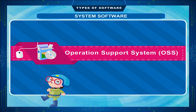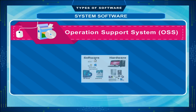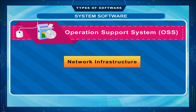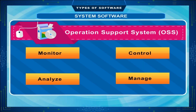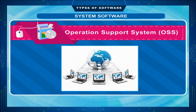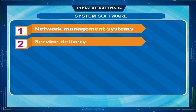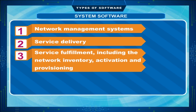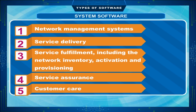Operation Support System (OSS). An OSS can be defined as the hardware and software that service providers use to manage network infrastructure, deploy services, and provide connectivity. It enables a service provider to monitor, control, analyze, and manage the services on its network. In general, an OSS covers at least the following five functions: Network Management Systems, Service Delivery, Service Fulfillment (including Network Inventory, Activation, and Provisioning), Service Assurance, and Customer Care.